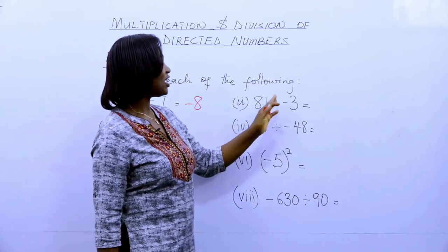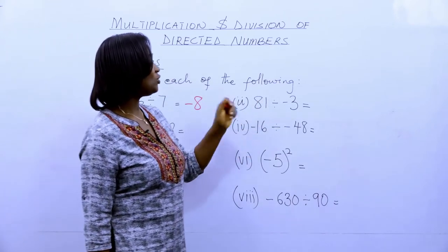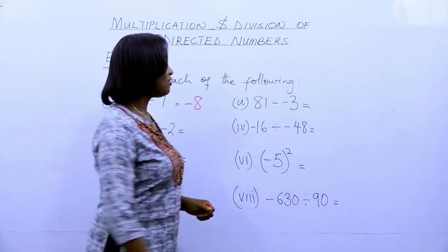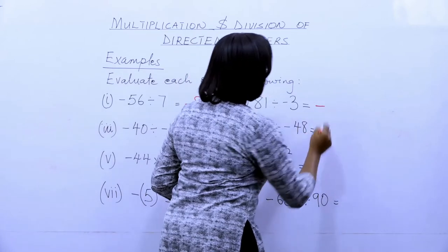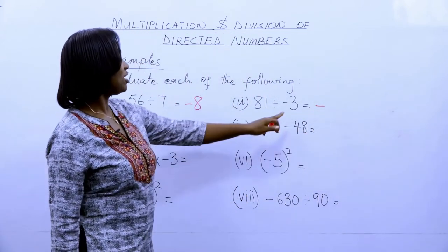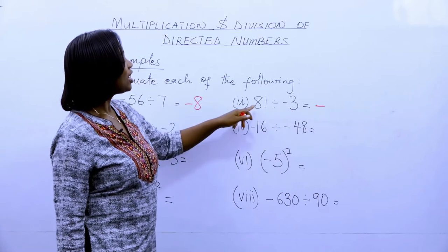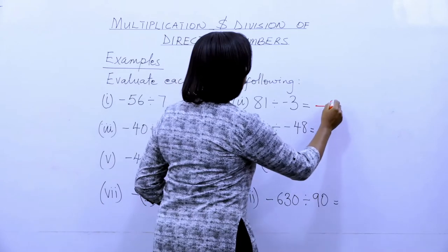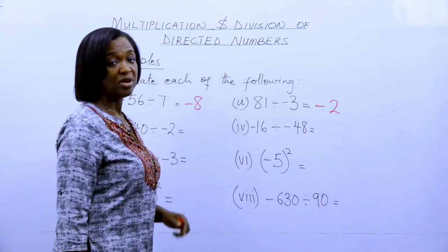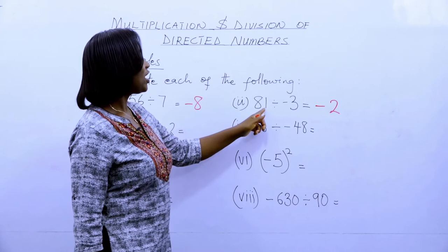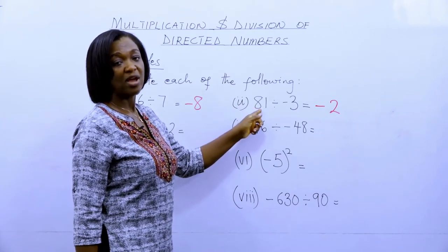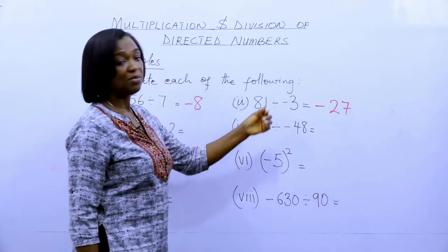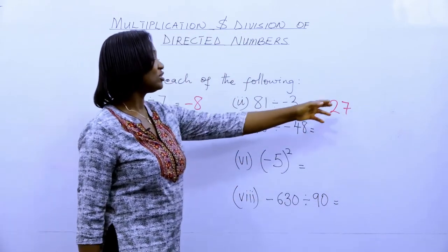Eighty-one divided by minus three: eighty-one is positive but three is negative, so the answer is definitely negative. Eighty-one divided by three — three into eight gives two remainder two, three into twenty-one gives seven — so eighty-one divided by minus three is minus twenty-seven.